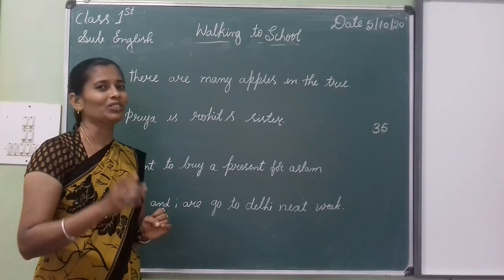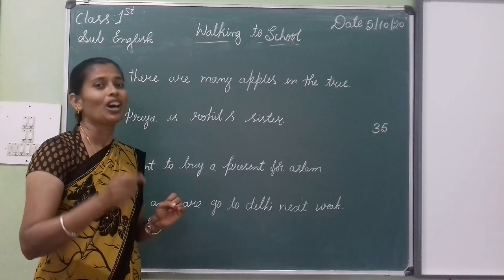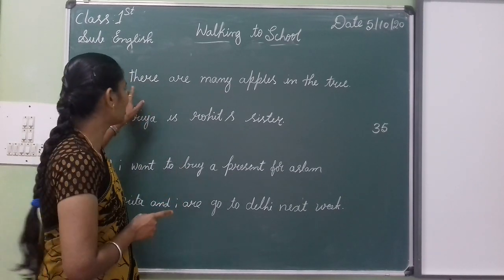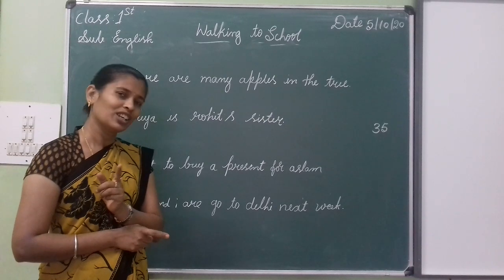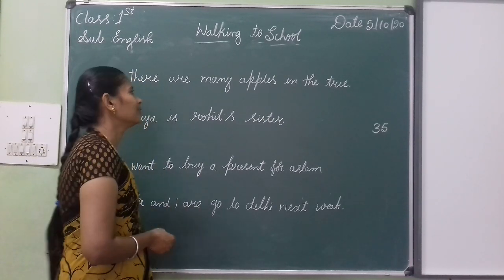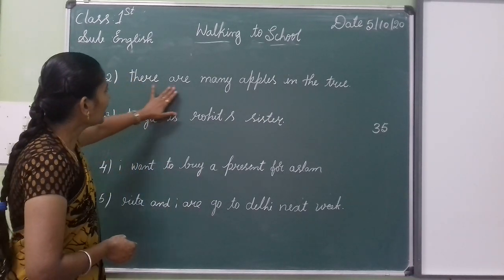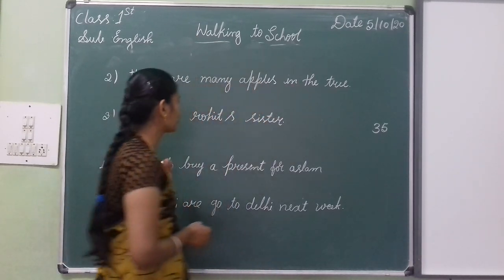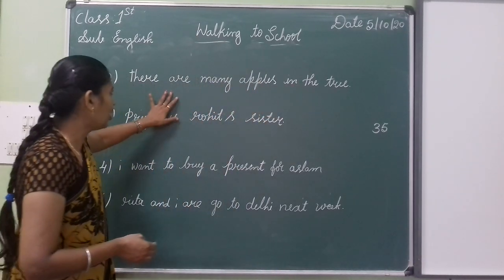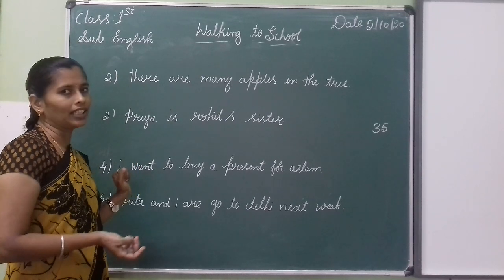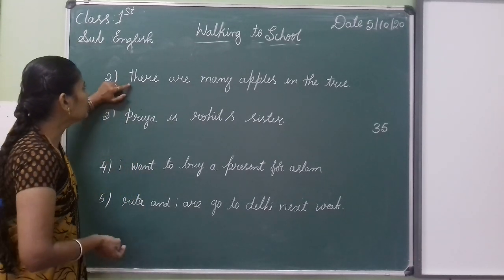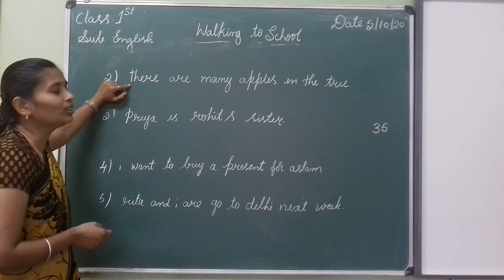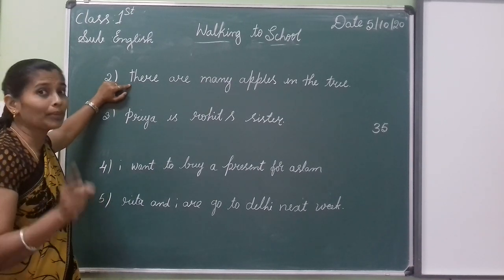So we have to start with a capital letter. See: 'There are many apples in the tree.' There are many apples in the tree — capital letter T.